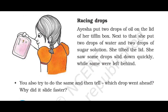The next topic is racing drops. Ayesha put two drops of oil, two drops of water, and two drops of sugar solution on the lid of her tiffin box. After that, she tilted the lid. She saw some drops slide down quickly while some were left behind. The reason behind it is the thickness of the liquid — if the liquid is thick, it will slide down slowly. The water drops will slide down quickly because oil and sugar solutions are thicker than normal water, so the water drop will win the race.